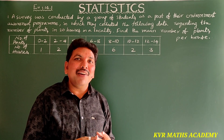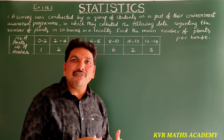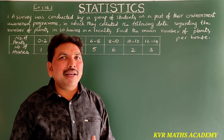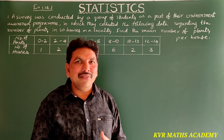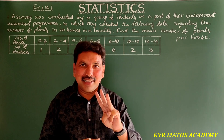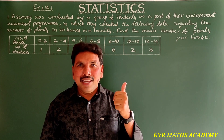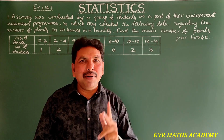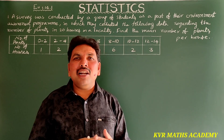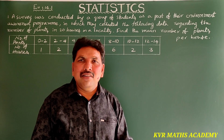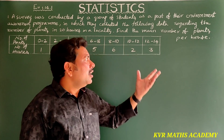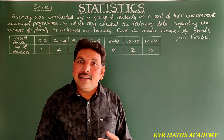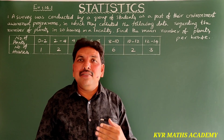We have to find the average number of plants per house using an appropriate method. There are three methods for finding the mean: the direct method, the assumed mean method, and the step deviation method. You can use any method and get the same answer. For the first problem, I will apply the direct method.